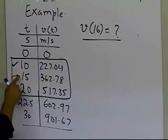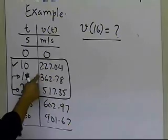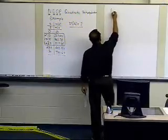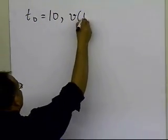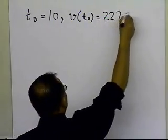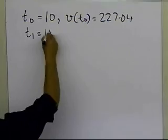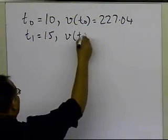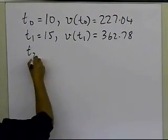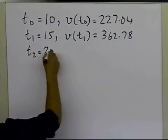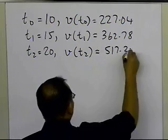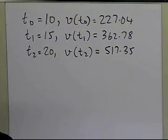These become t0, t1, and t2, with corresponding velocities v-sub-t0, v-sub-t1, and v-sub-t2. So: t0 = 10 with v(t0) = 227.04; t1 = 15 with v(t1) = 362.78; and t2 = 20 with v(t2) = 517.35. Those are the three data points given to us.